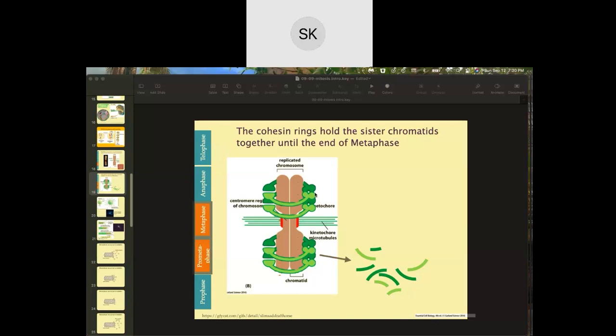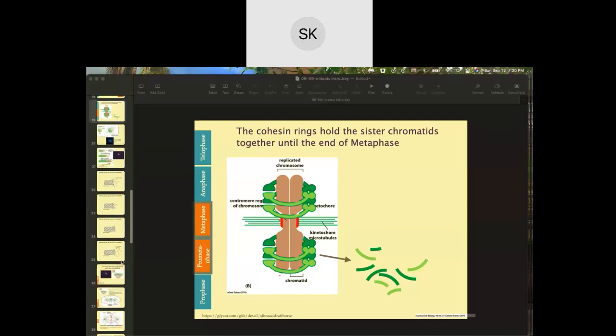Again, the cohesins are kind of like handcuffs, handcuffing the two sister chromatids together so that they don't separate until anaphase. Now what allows them to separate at that point? Let's look at the next slide here.